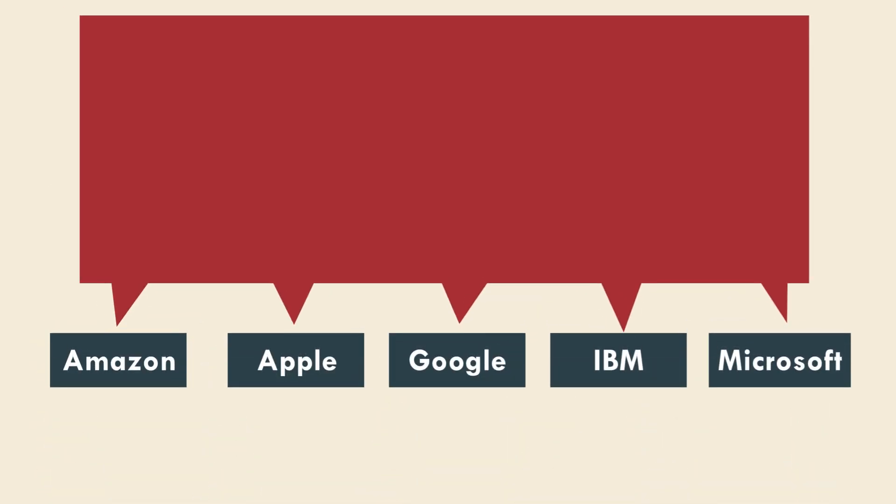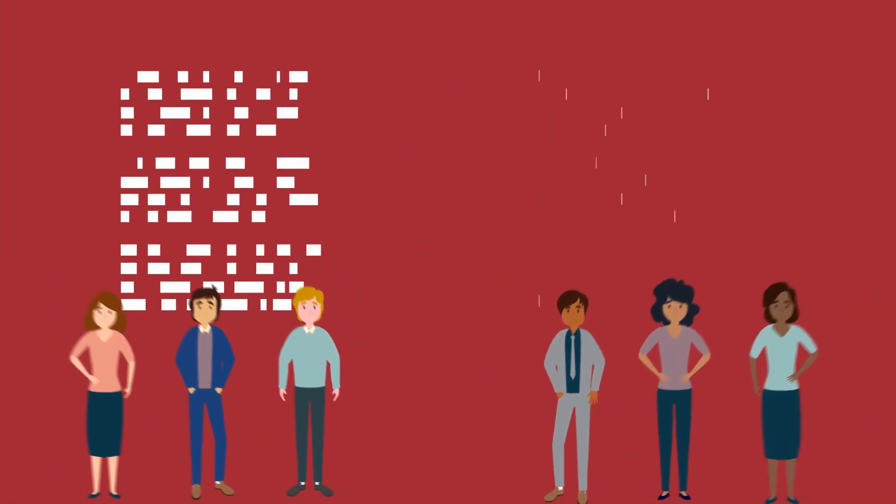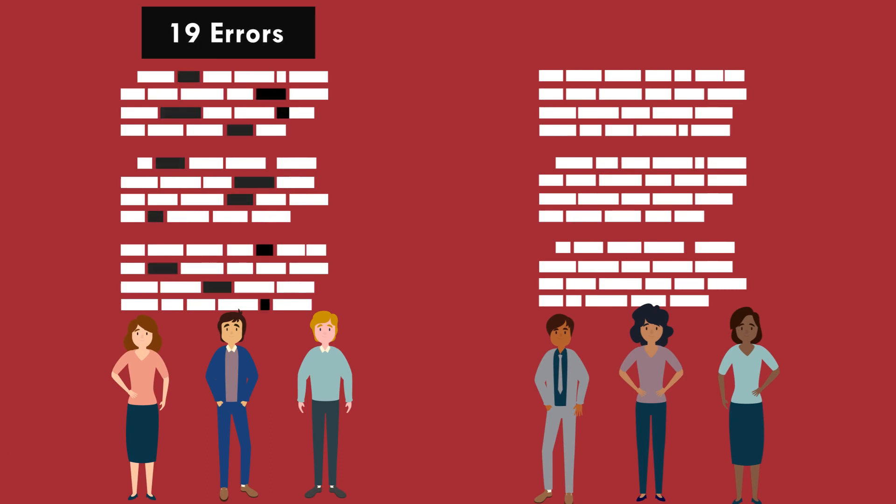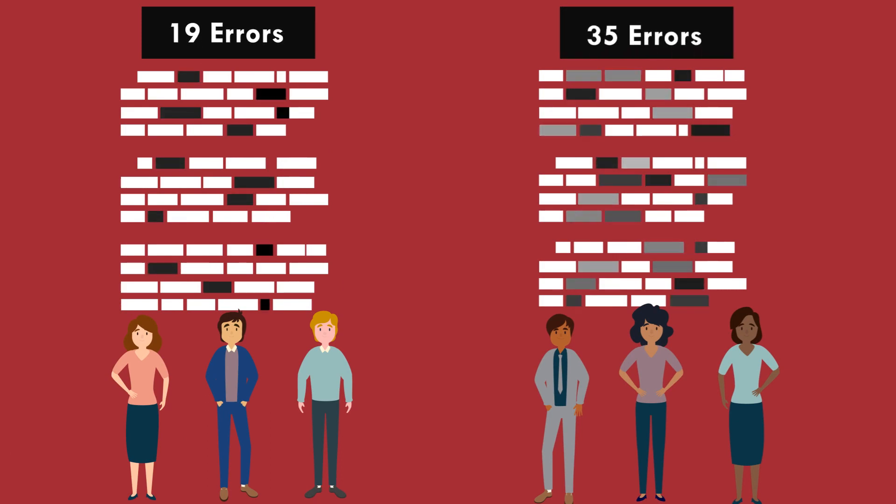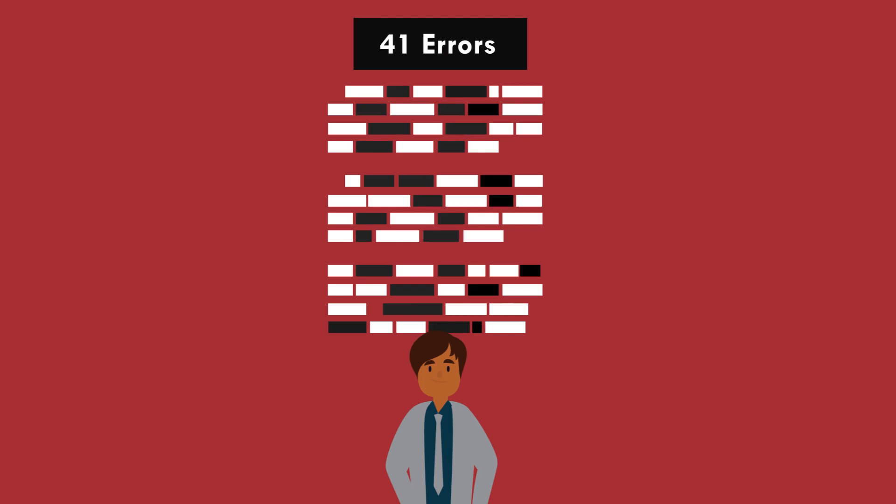We found all five services showed significant racial disparities. For every hundred words, the speech-to-text systems made 19 errors for white speakers compared to 35 errors for black speakers, nearly twice as many. The systems performed particularly poorly for black men, with error rates above 40%.